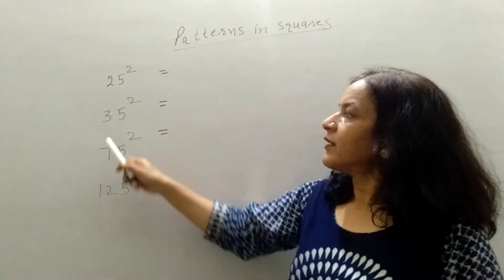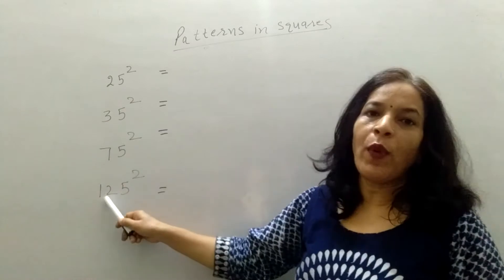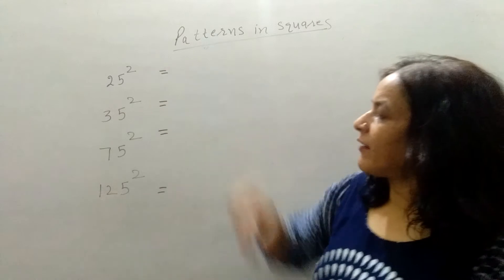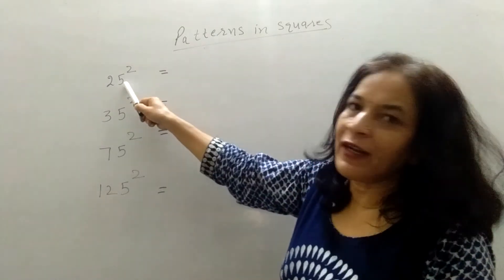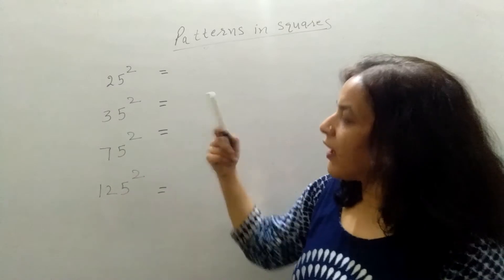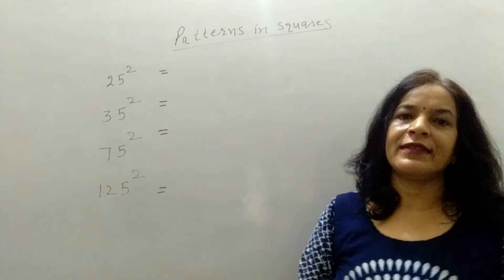See, I have taken here some numbers: 25 square, 35 square, 75 square, 125 square. What is common in all these numbers? 5. 25 contains 5 as the unit digit. In 35, 5 is the unit digit. Again 5 is the unit digit. And in 125, 5 is the unit digit.